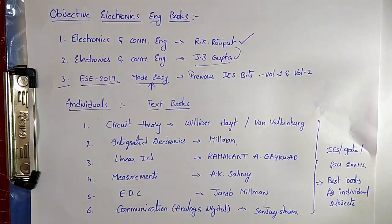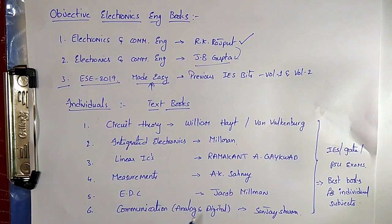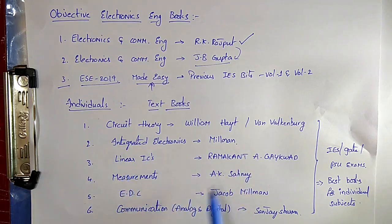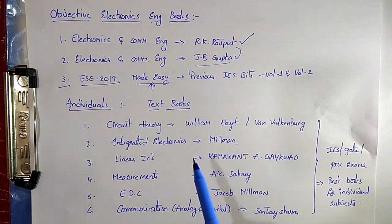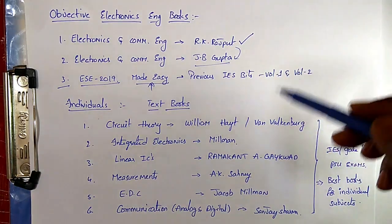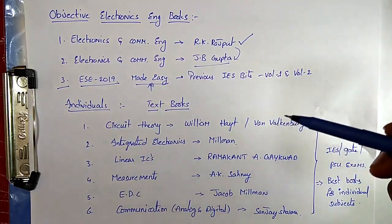Coming to individual subject books: for circuit theory — William Hayt or Van Valkenburg; for integrated electronics — Jacob Millman; for linear ICs — Ramakant; for measurements — AK Sawhney; for electronic devices and circuits — Jacob Millman; for communication, both analog and digital — Sanjay Sharma. These books are very useful for IES, GATE, or PSU exams. But for RRB JE, no need to buy all these books — only go for them if you are also preparing for degree level jobs, IES, or GATE. Links for all these books are posted in the description box and comments.